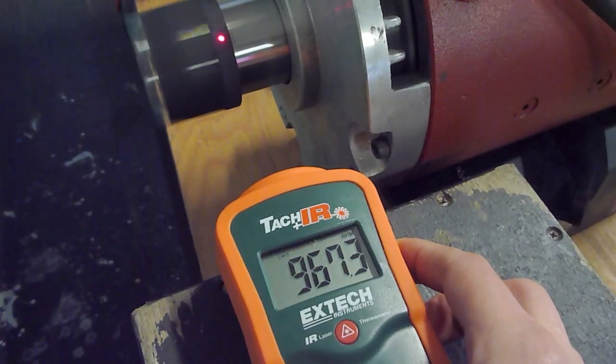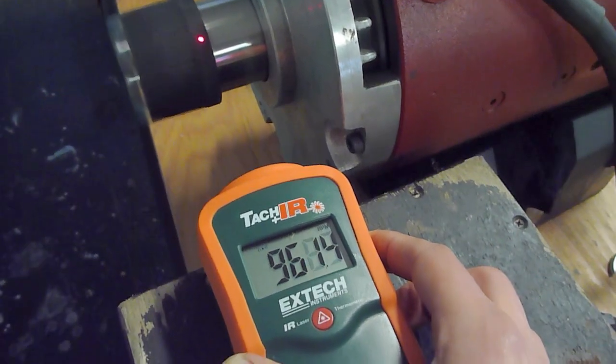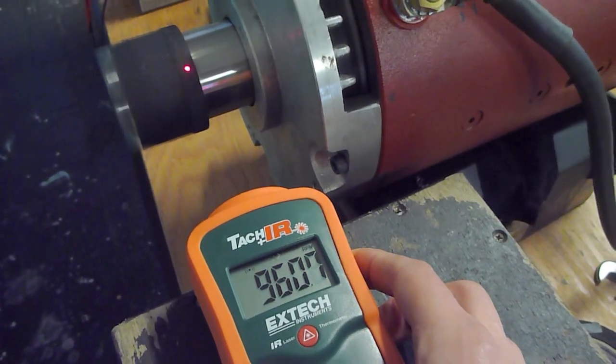Here we are at 970. So it's 30 RPM below.